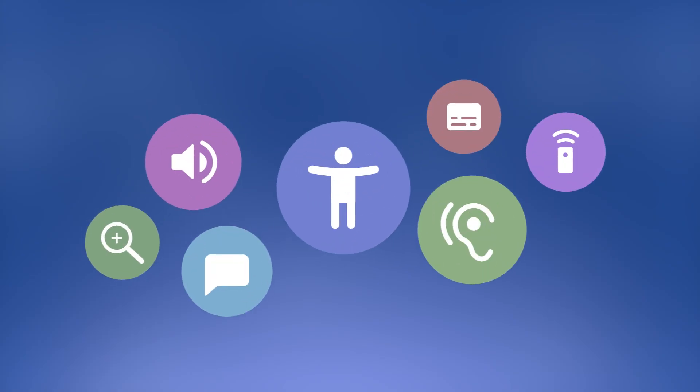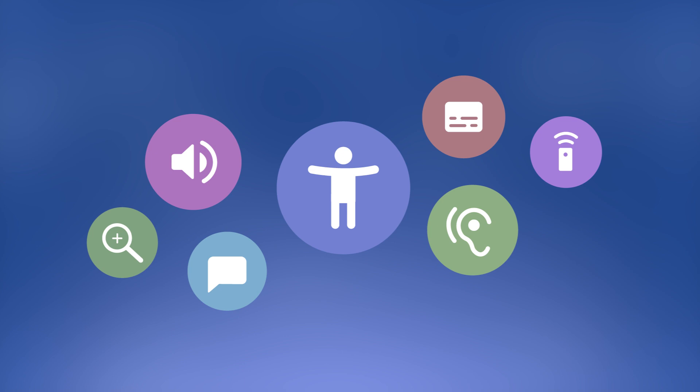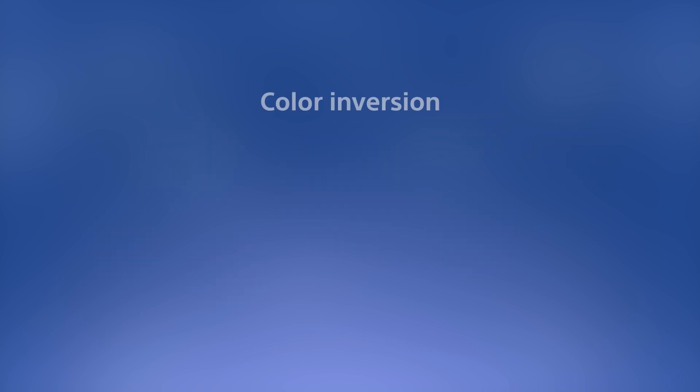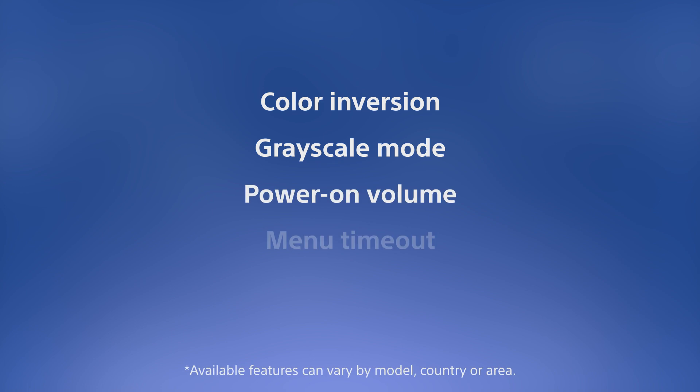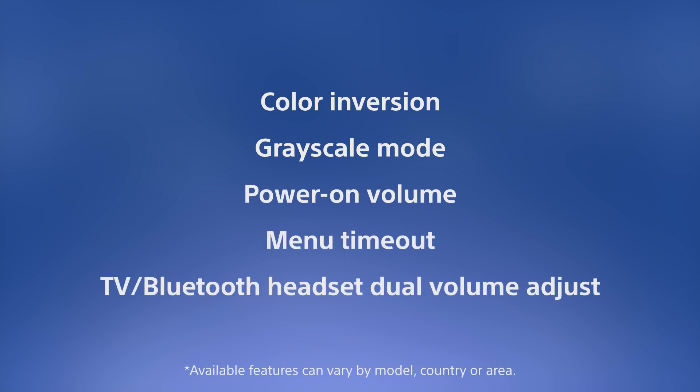Sony Bravia TVs have many features that increase accessibility for people of all abilities. This video reviews new accessibility features found in various Bravia TVs. The new features are color inversion, grayscale mode, power on volume, menu timeout, and TV/Bluetooth headset dual volume adjust. Available features vary by model, country, or area.